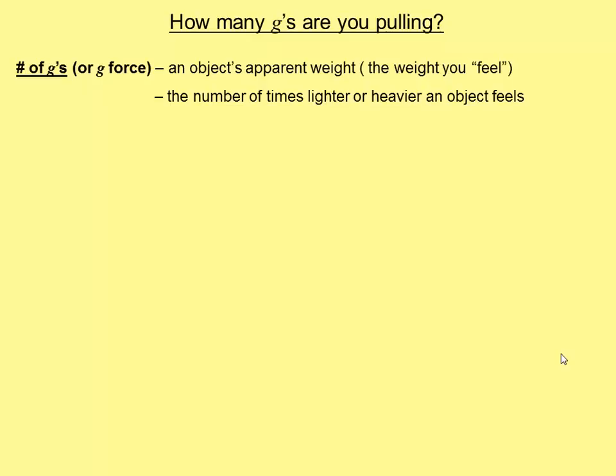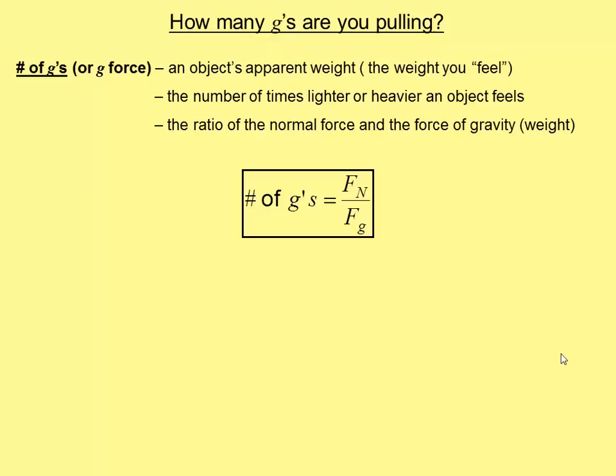Another way of looking at the number of g's is that it's the number of times lighter or heavier an object feels. And you calculate it by taking the ratio of the normal force and the force of gravity. And remember, force of gravity is also known as weight. So here's our formula to calculate the number of g's that you are pulling. Remember that you don't actually feel the force of gravity. You feel your interaction with the surroundings through that normal force.